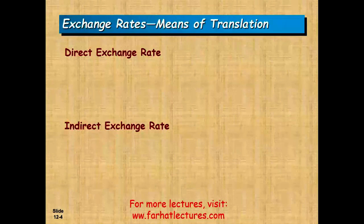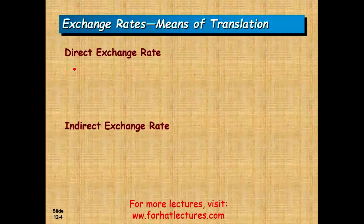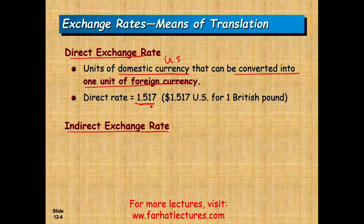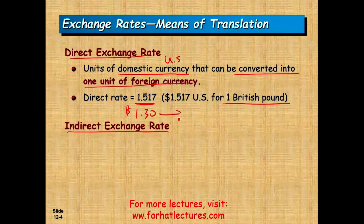Basic terminology you need to be aware of when dealing with foreign currency translation includes the direct exchange rate and the indirect exchange rate. The direct exchange rate is the units of domestic currency — U.S. dollars — that can be converted into one unit of foreign currency. For example, the direct rate might be $1.51 for one British pound, meaning you need $1.51 to buy one British pound. Or $1.30 for one euro, or $0.001 to buy one Japanese yen.